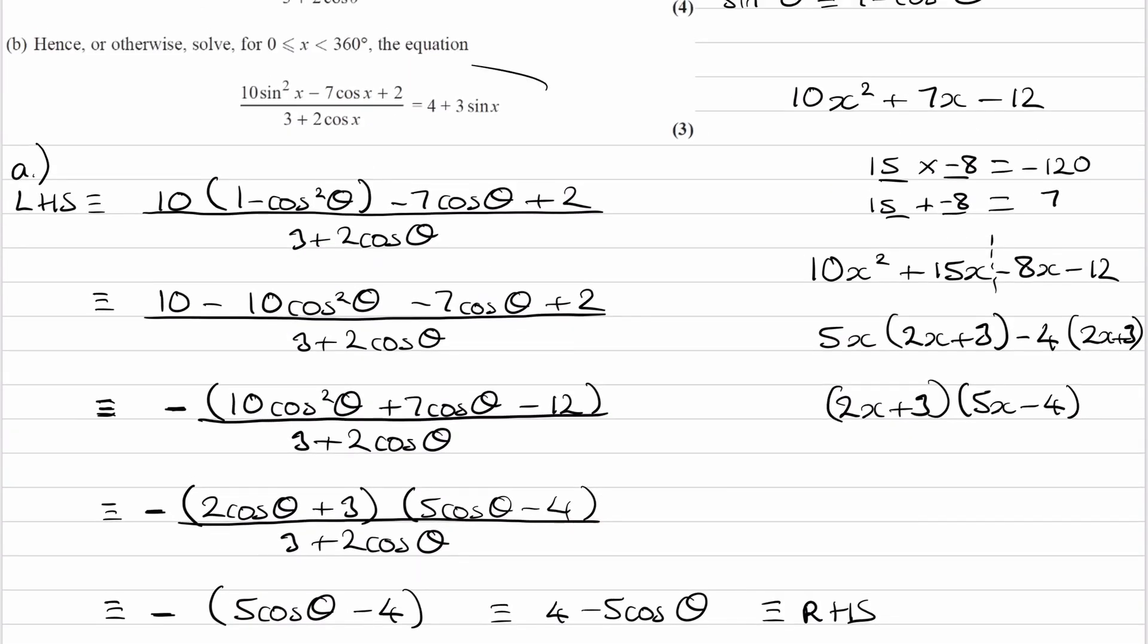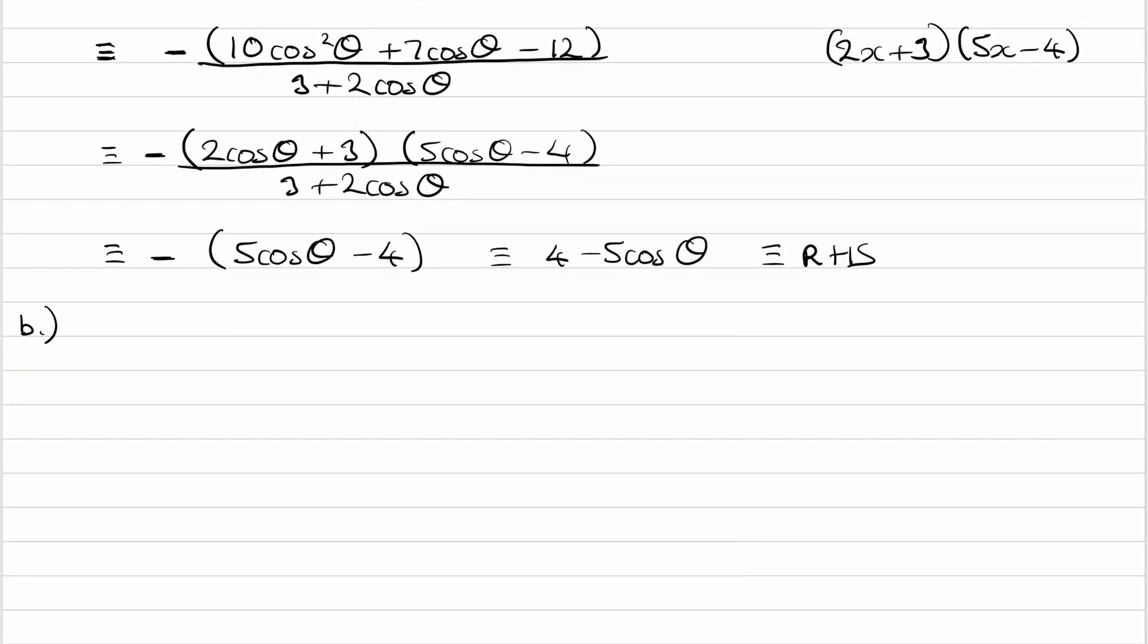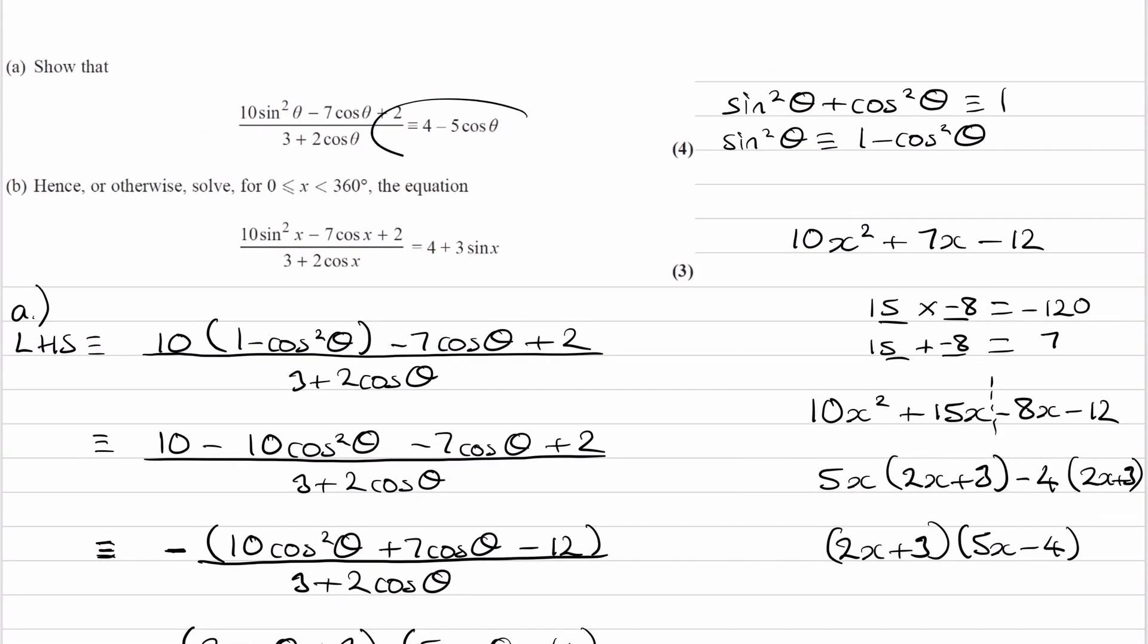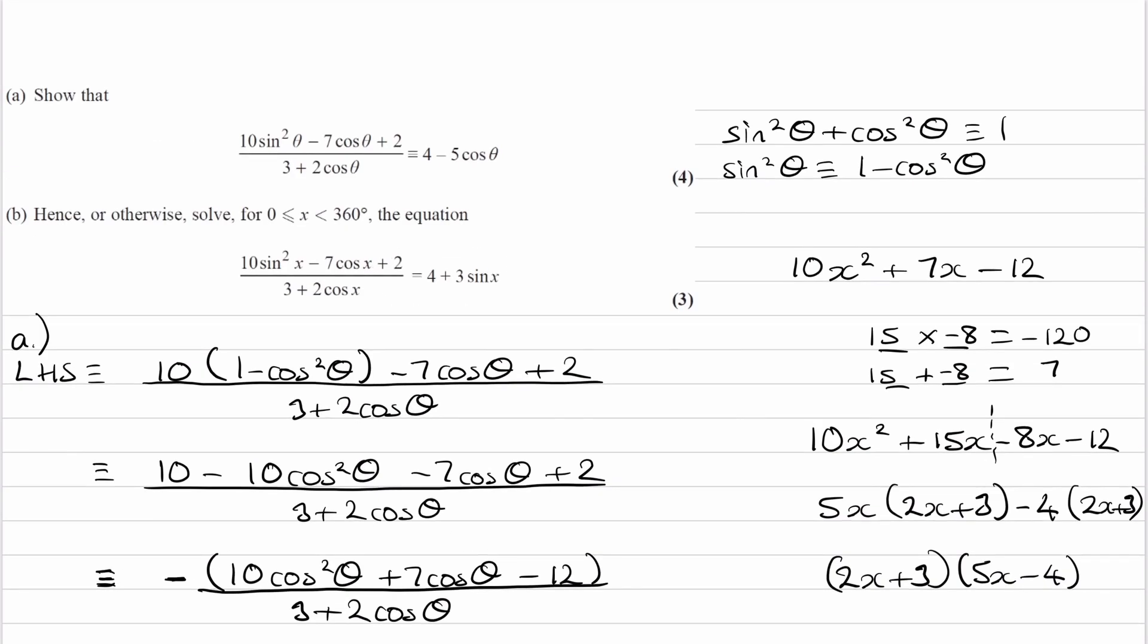On to part B, hence solve this equation between 0 and 360. Let's look at the similarities between what we have here and what we have here. The left-hand sides are exactly the same. So that tells me that we're going to be replacing what we have here with this, but it will be cos x instead of cos theta. So our equation for part B would then become 4 minus 5 cos x is equal to 4 plus 3 sin x.